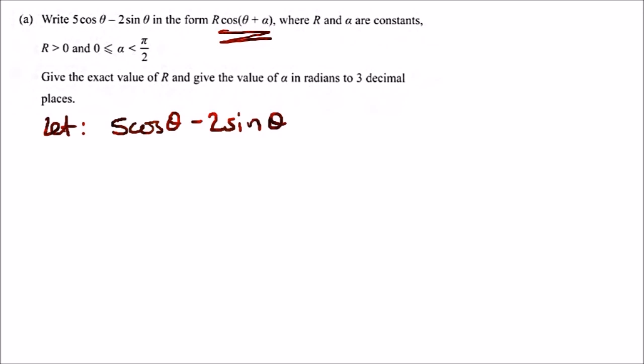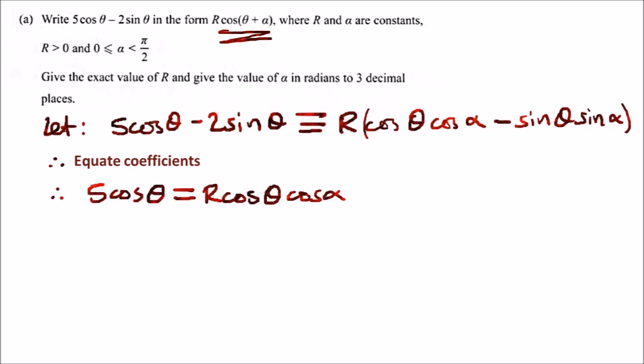It should be written as r bracket cos theta times cos alpha minus sine theta times sine alpha. From here, we're simply going to equate the coefficients. Notice on the left side we have cos theta on both and sine theta on both. In terms of cos theta, we can say 5 cos theta equals r cos theta times cos alpha. Canceling down the cos theta should give us r cos alpha equals 5.